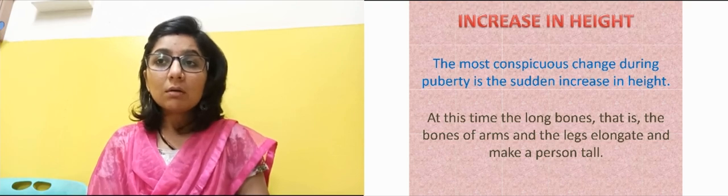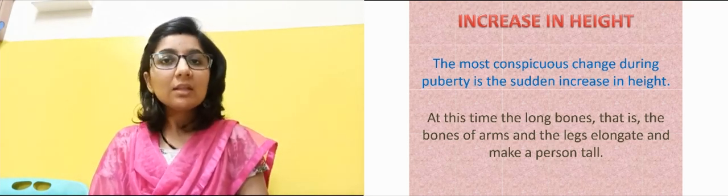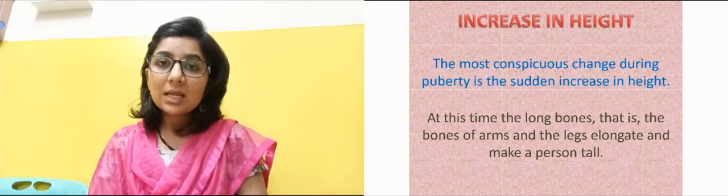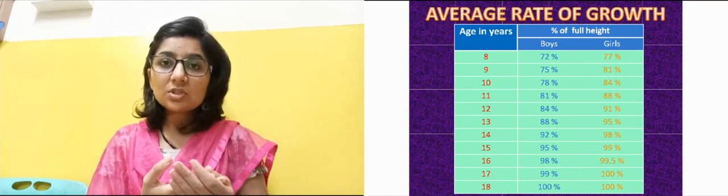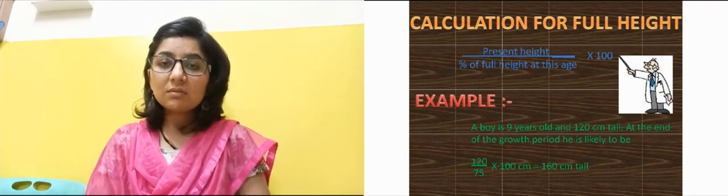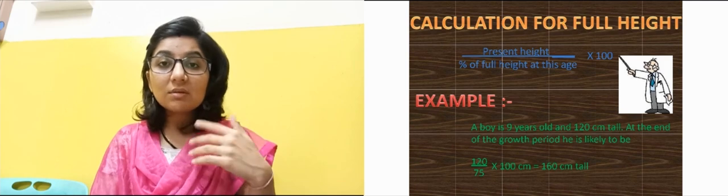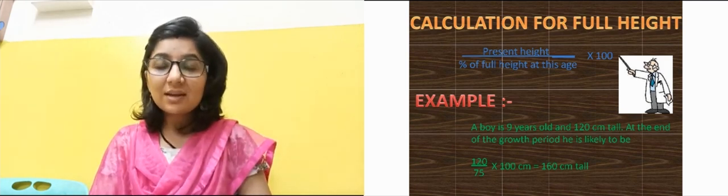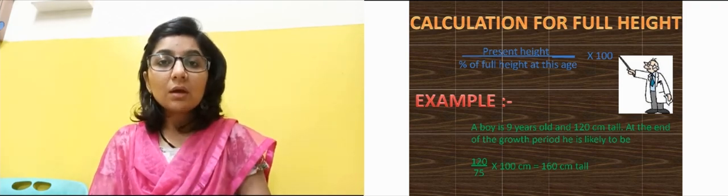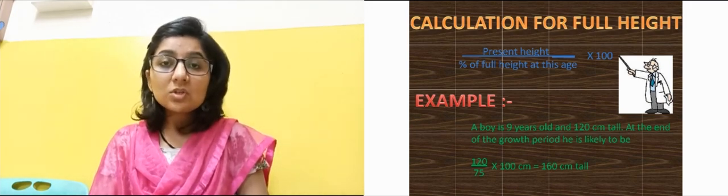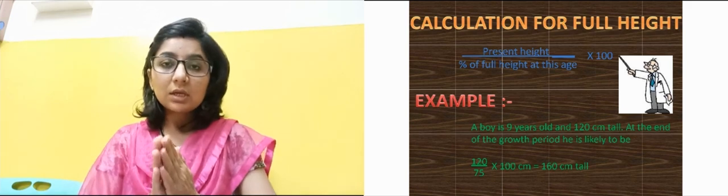As the bones grow in length, the person's height also increases rapidly. Looking at the table, from age 11 to 18, the percentage of height increases steadily — starting from 81% and between ages 14 to 18, height can increase more than 90%. This shows how rapid height growth is during puberty.